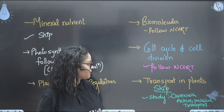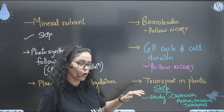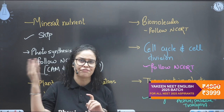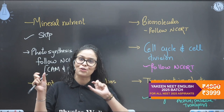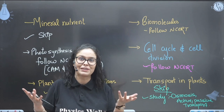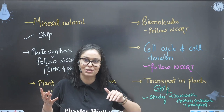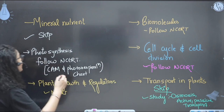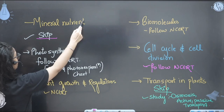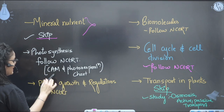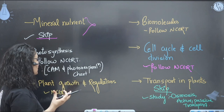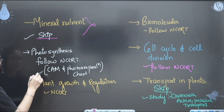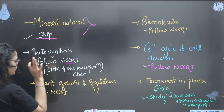For cell cycle and cell division, follow NCERT. For transport in plants, skip the whole chapter - but osmosis, active transport, and passive transport terms are used in different chapters, so study those concepts from the old NCERT. For mineral nutrition, skip the full chapter. For photosynthesis, follow NCERT. The C3, C4 respiration and CAM chart is given, so study that chart as well.